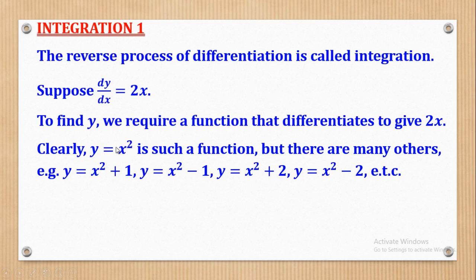If y is equal to x squared and we differentiate, we bring down the power to give 2, reduce the power by 1 to give x power 1, which is 2x. But also there are other functions — when you differentiate a constant, you get 0. So if y equals x squared plus any constant, such as x squared plus 1, x squared minus 1, or x squared plus 2, as long as that other part is a constant, it will still give the same result of 2x.